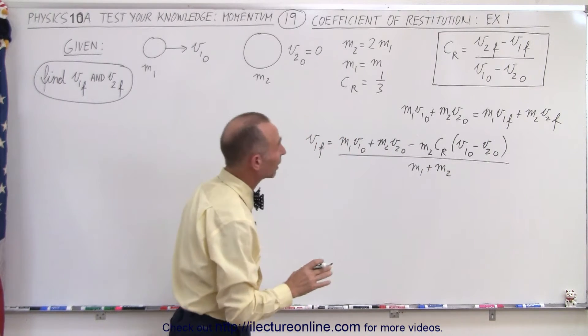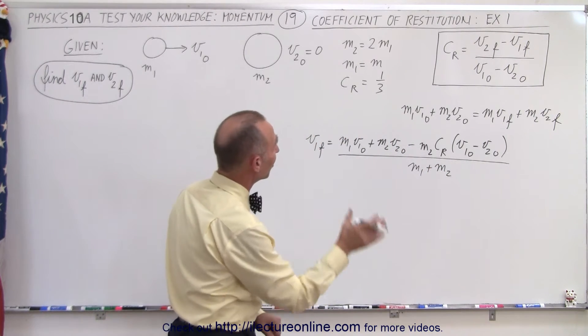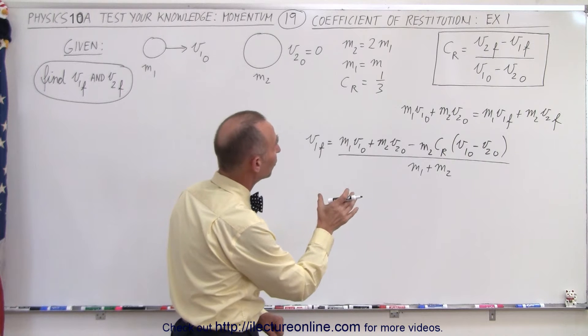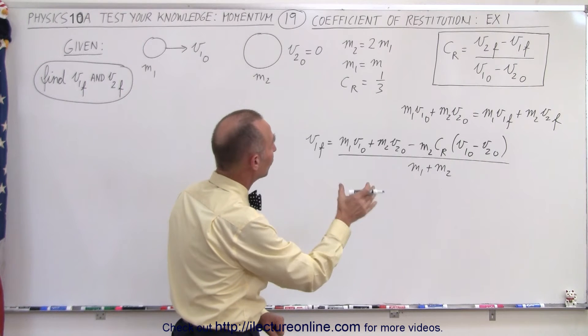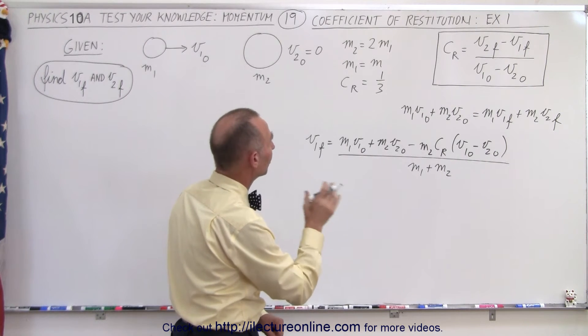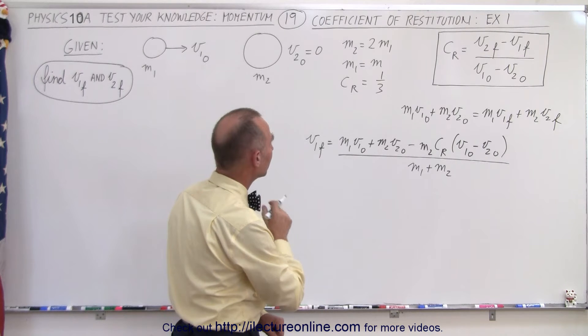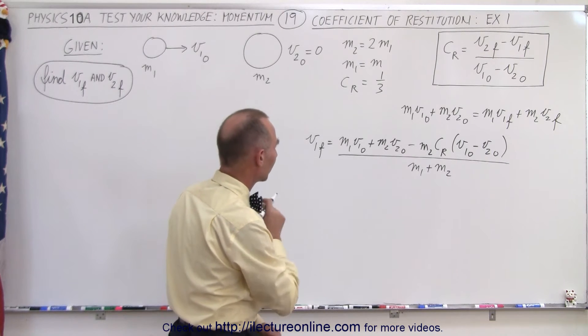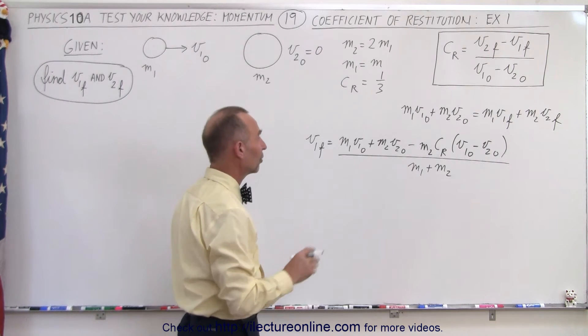Now let me check real quick to see if that makes sense on the signs. Moving that across: v1 final, v2 final minus that, v2 final — yes, I believe that's correct.